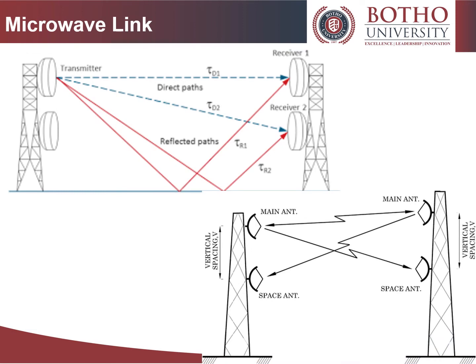A microwave link is a communication system that uses a beam of radio waves in the microwave frequency range to transmit video, audio, or data between two locations — from just a few feet to several miles apart. Microwave links are commonly used by television broadcasters to transmit programs across the country, or from an outside broadcast back to a studio. Mobile units can be camera-mounted, allowing cameras freedom to move without trailing cables — often seen on touchlines of sports fields on Steadicam systems.